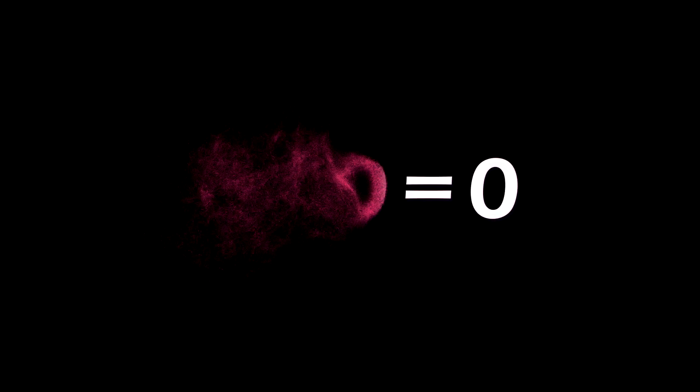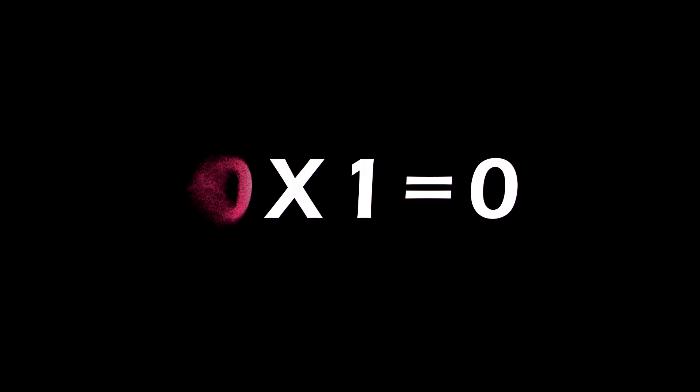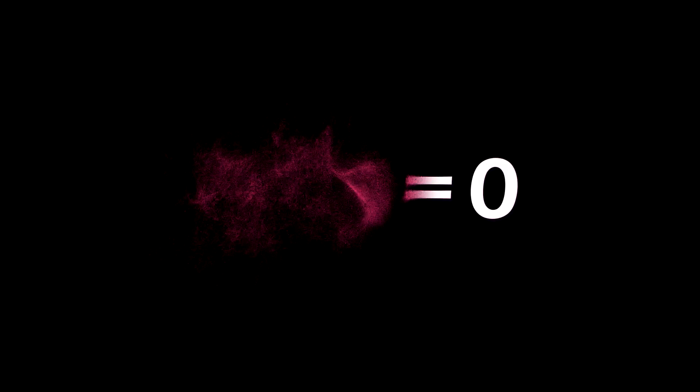0 times 0 is 0. 0 times 1 is 0. 0 times 2 is 0. 0 times 3 is 0. 0 times 4 is 0.